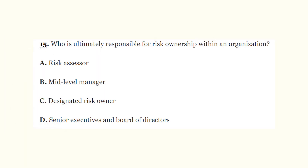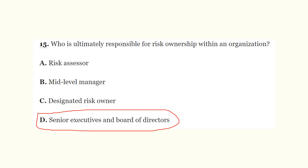Question number fifteen: who is ultimately responsible for risk ownership within an organization? A) risk assessor, B) mid-level manager, C) designated risk owner, D) senior executives and board of directors. The correct answer is D. Senior level executives of the C-suite, as well as the board of directors, are ultimately responsible for risk ownership within an organization, even when a lower-level person has been designated as a risk owner.